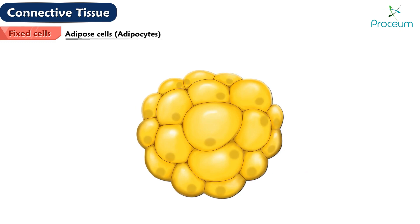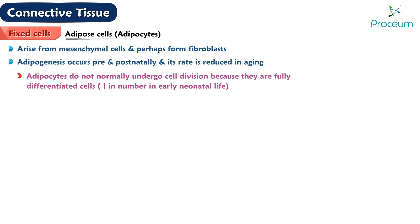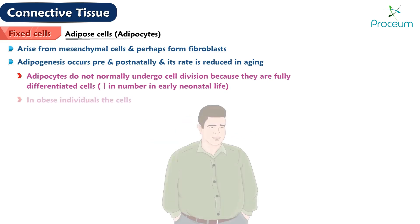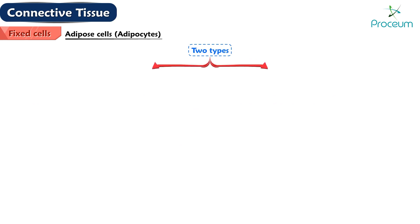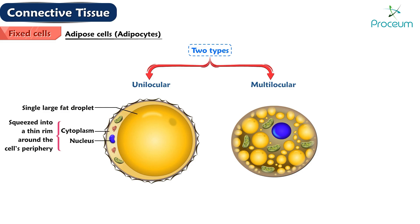Adipose cells, also known as adipocytes, arise from mesenchymal cells and perhaps from fibroblasts. Adipogenesis occurs pre- and postnatally and its rate is reduced in aging. Adipocytes do not normally undergo cell division because they are fully differentiated cells; however, they do increase in number in early neonatal life. In obese individuals, the cells not only become enlarged but also form new fat cells. Unilocular adipose cells contain a single large fat droplet; the cytoplasm and nucleus are squeezed into a thin rim around the cell's periphery. They are surrounded by a basal lamina and are responsible for the synthesis, storage, and release of fat.